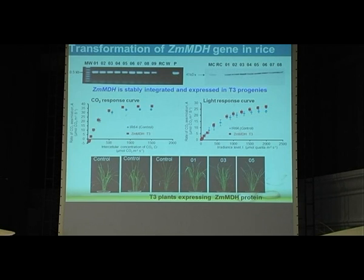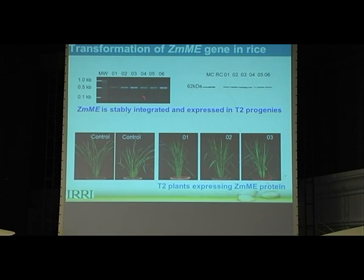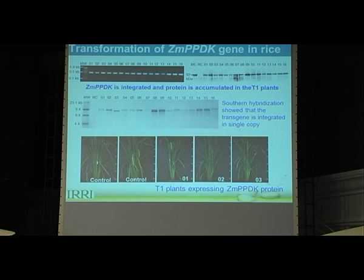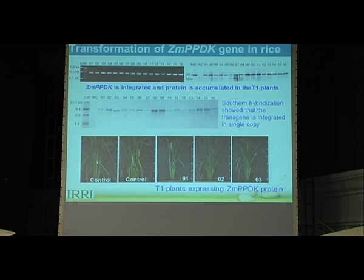For malic enzyme, we have plants in T2 generation and the progenies are accumulating protein. The plants are growing well and we will characterize them at physiological level as we advance to the next generation. For PPDK, these are T1 plants — we obtained PCR bands specific to maize PPDK gene, and the protein of 92 kilodaltons was expressed in all progenies of this event. Copy number analysis shows a single integration and the plants are growing normally.